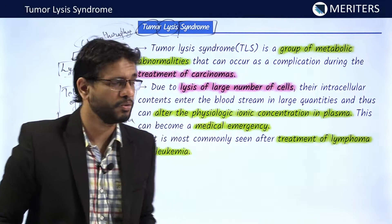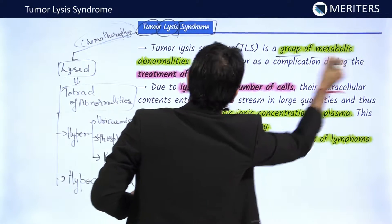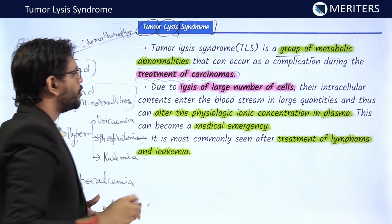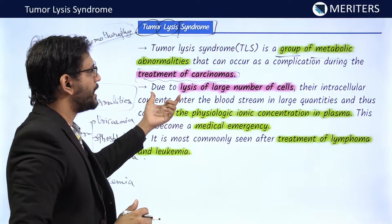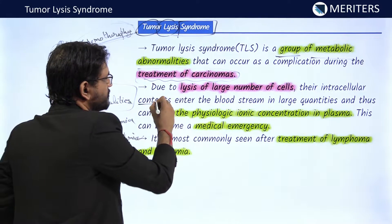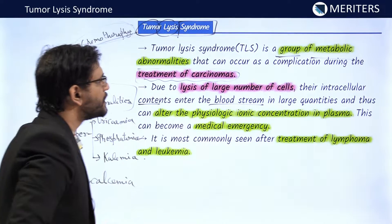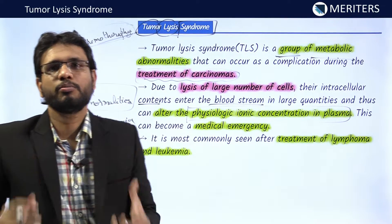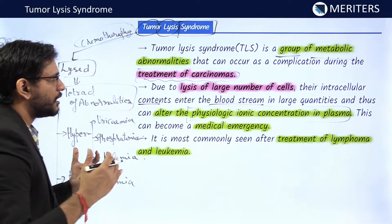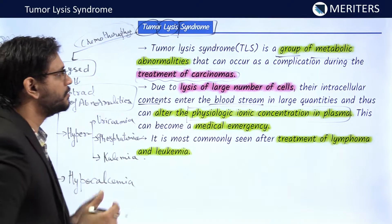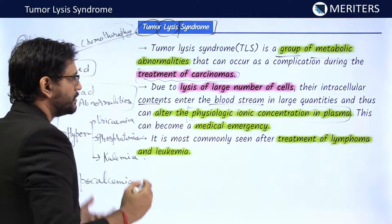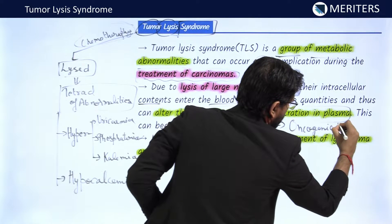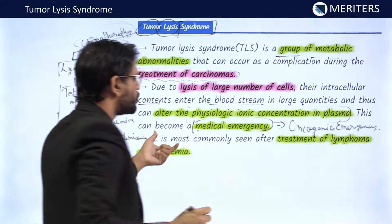Tumor lysis syndrome is a group of metabolic abnormalities that can occur as a complication during the treatment of carcinoma. Due to lysis of a large number of cells, intracellular contents enter the bloodstream in large quantities, altering the physiologic ion concentration in plasma. The homeostasis of the body is altered due to these intracellular breakdown products entering the bloodstream, making this a medical emergency — specifically an oncological emergency.